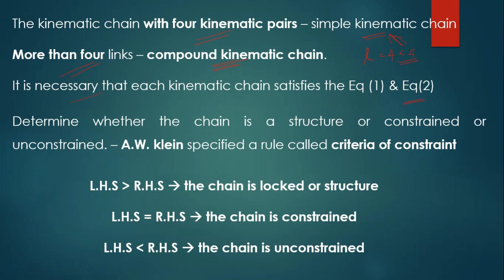Several methods exist to identify whether a given chain is a structure, unconstrained, or constrained. Here we discuss the criteria of constraint specified by A.W. Klein, who gave three rules: if LHS > RHS, the chain is a locked structure; if LHS = RHS, the chain is constrained; if LHS < RHS, the chain is unconstrained. We can also identify this based on degree of freedom n: n = 0 (structure), n = 1 (constrained), n > 1 (unconstrained).